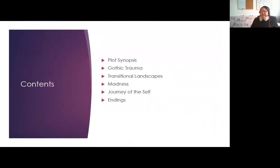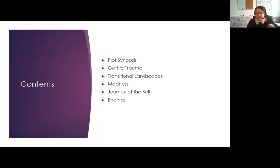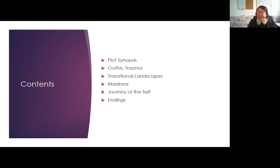Here's an overview of the talk. I'll go through a little bit of the plot synopsis and then lead you to where I'm going with different interpretations of this film. The main topics I'm briefly discussing are: Gothic trauma, the landscape as a transitional space, the madness that comes through especially in terms of the maternal, and this journey of the self through the landscape, moving on to endings.